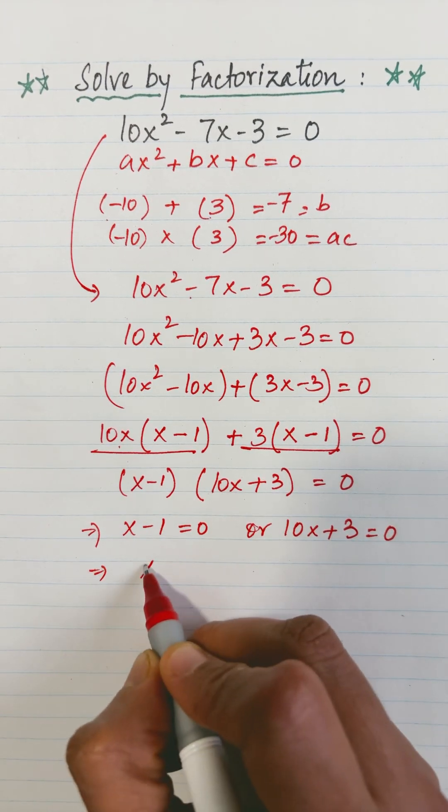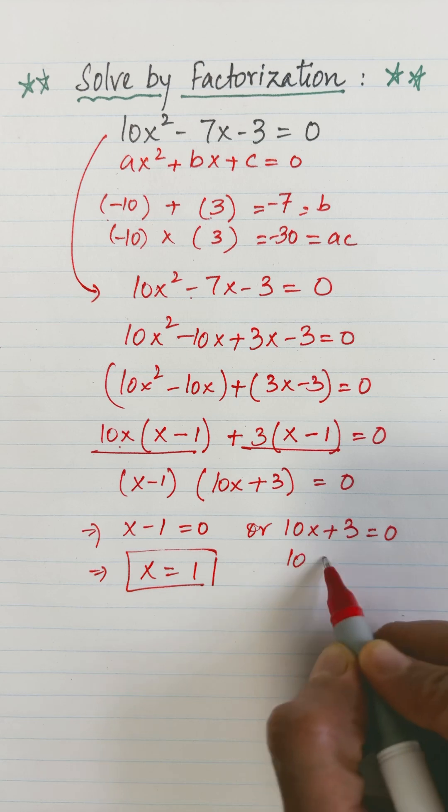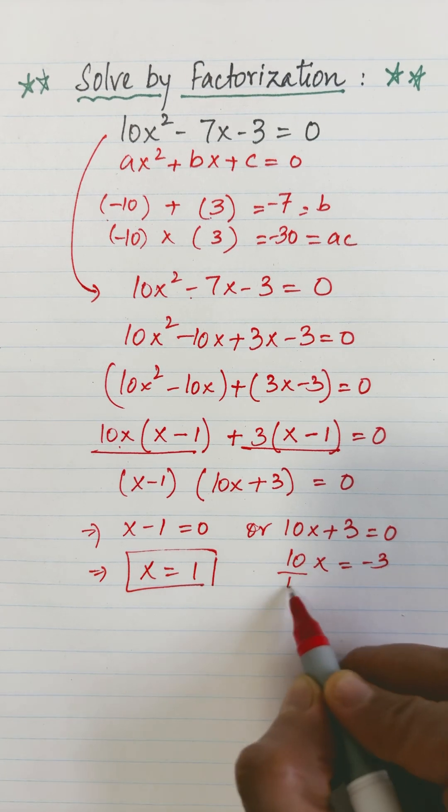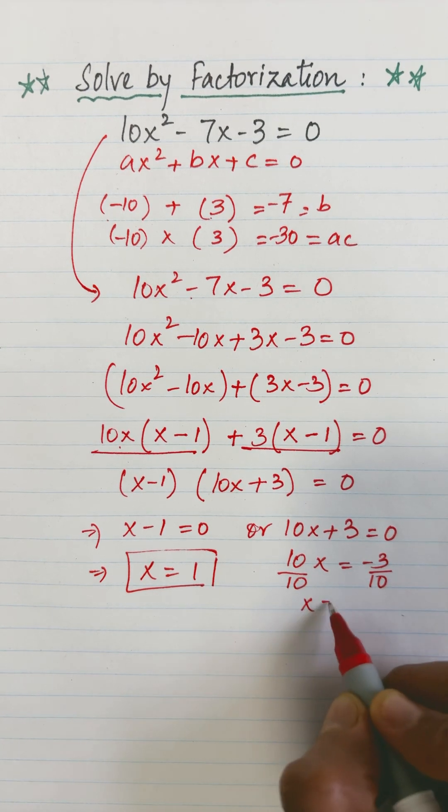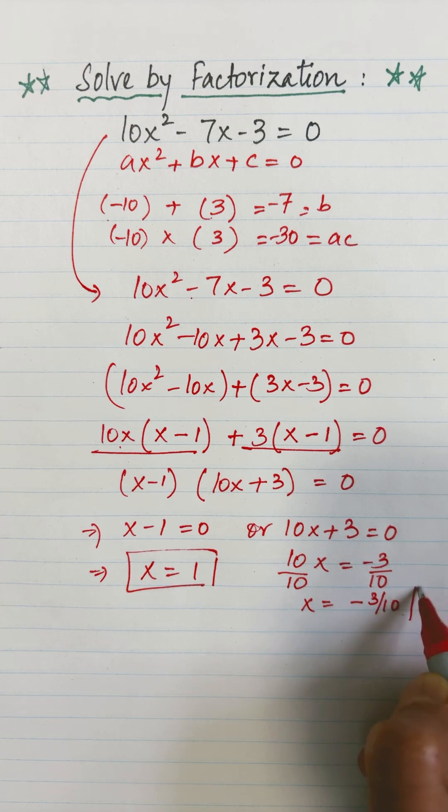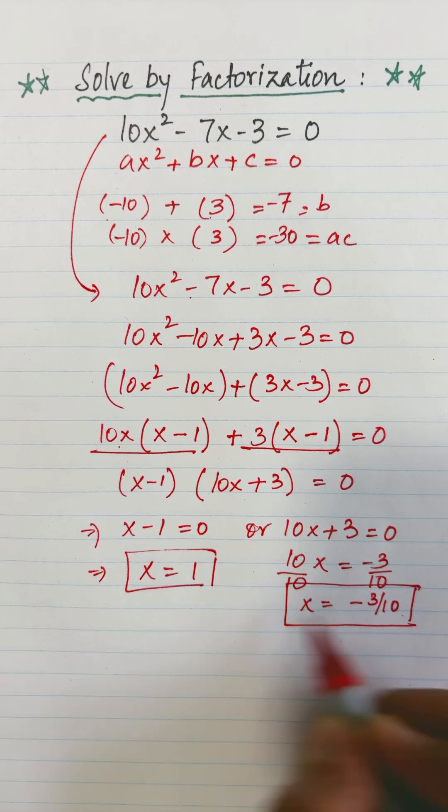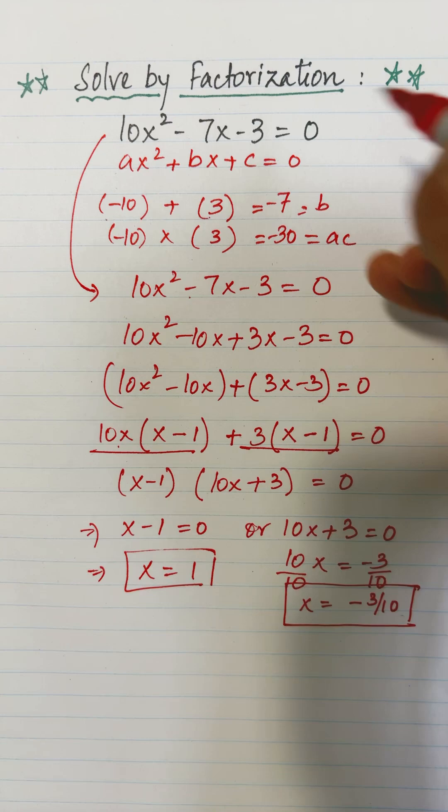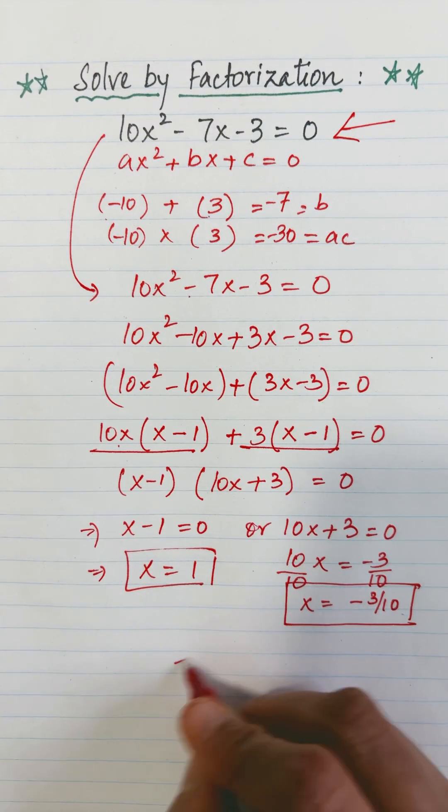This gives me x = 1. From here I would get 10x = -3, divided by 10 on both sides. So x = -3/10. Therefore x = -3/10 or x = 1 are the two solutions of this quadratic equation. That's all.